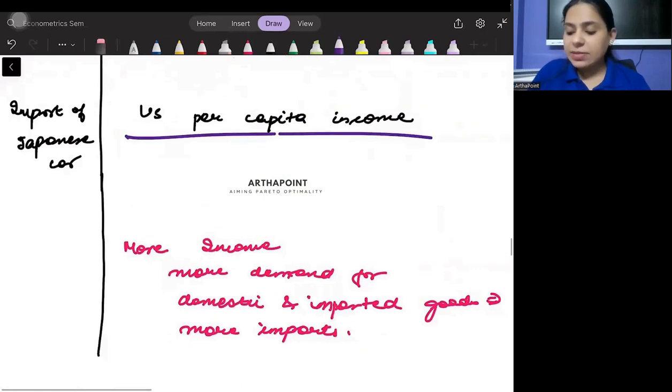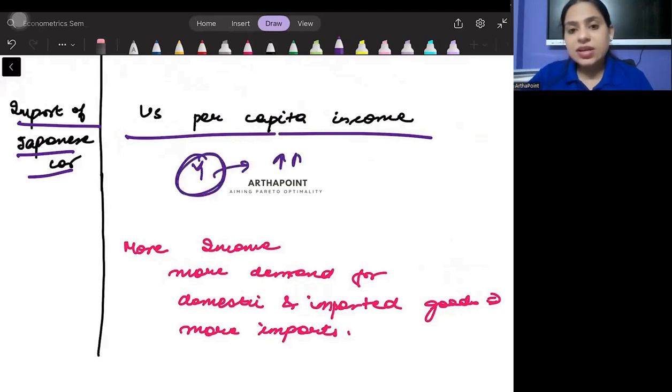US per capita income and import of Japanese car. When you have higher income with people, when people earn more then they demand more goods. And they demand not only domestic goods but they also demand foreign goods. So more income in your economy implies that the imports will also increase in the economy. Imports are actually a function of income. So the imports will increase, positive relationship.